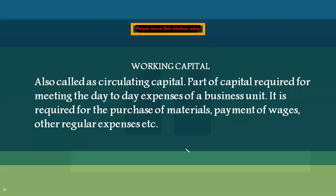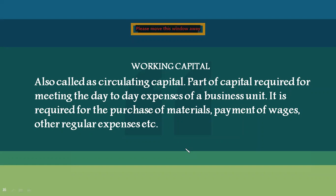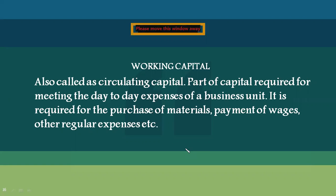Working capital is also known as circulating capital — note this for objective questions. Working capital is that part of capital required for meeting the day-to-day expenses of a business unit, such as purchasing raw materials, purchasing store items, payment of wages, electricity charges, water charges, fuel charges, and taxes. Working capital is continuous and recurring in nature, unlike fixed capital which is a one-time long-term investment.